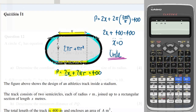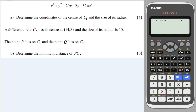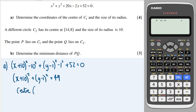Question 12: find the centre and radius of the circle x² + y² + 20x − 2y + 52 = 0 by completing the square. This gives (x + 10)² + (y − 1)² − 100 − 1 + 52 = 0, so (x + 10)² + (y − 1)² = 49. The centre is (−10, 1) and the radius is 7.